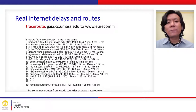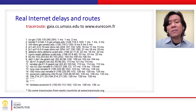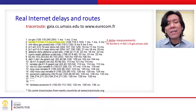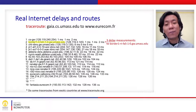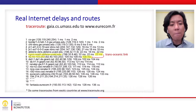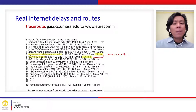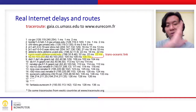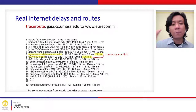Here is an example of Traceroute from gaia.cs.umass.edu to www.eurocom.fr. There are 19 hops between the two hosts. At hops one and two, the delay is quite small because those routers are in the same geographical area or even the same building. But at hops seven and eight, the delay increases dramatically because of trans-oceanic links — the packet must travel across the ocean from the US to Europe.